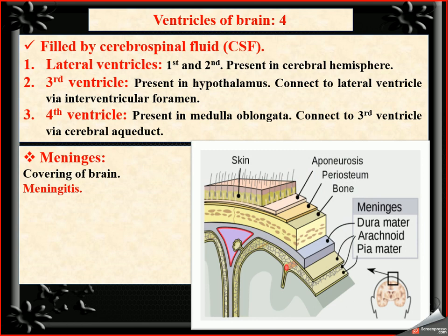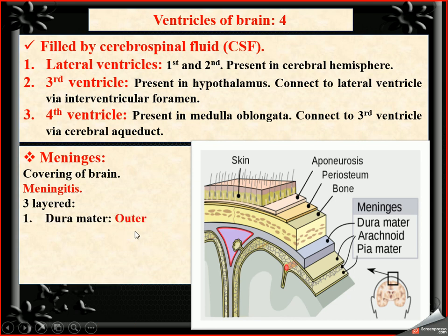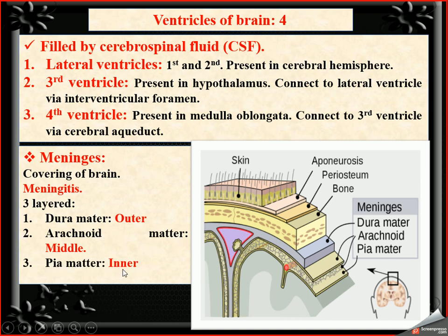The meninges is the covering of the central nervous system. Infection of the meninges is called meningitis. There are three layers of meninges: the outer layer is called the dura mater, the middle layer is the arachnoid mater, and the inner layer is called the pia mater.